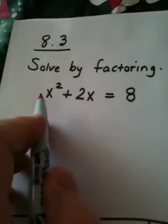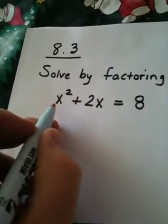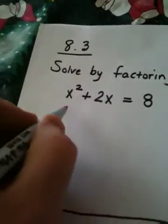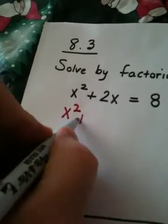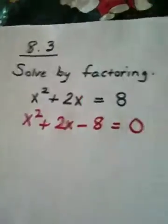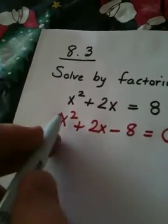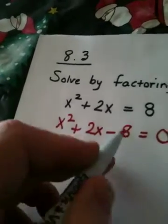Solve by factoring. Now this is review. First thing I'm going to do is put this in standard form. x squared plus 2x minus 8 is equal to 0. Remember? Equal 0 descending power order down to the constant.